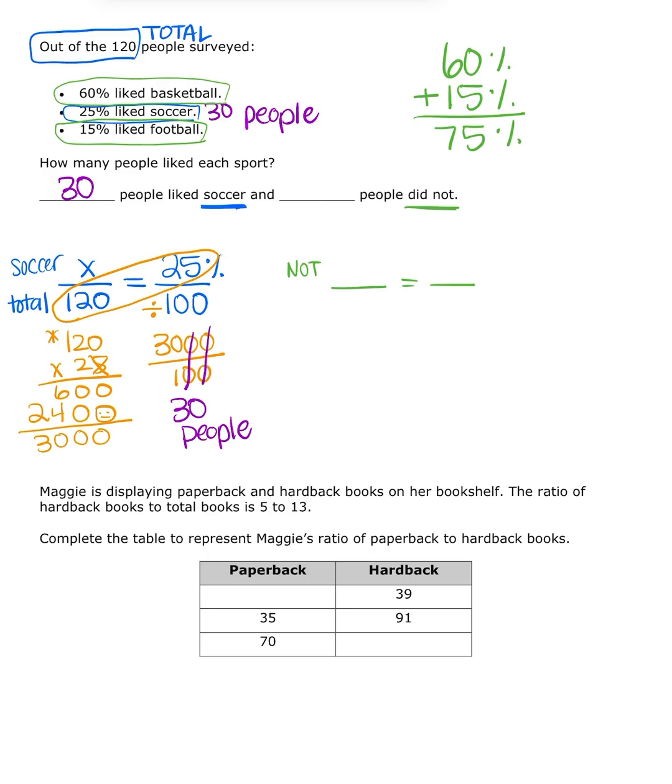So now that I have my percentage that did not, remember, 75 is a percentage, not a people. I would put my percent over 100. I would put my total on the bottom again, 120. And I'm looking for how many people did not like soccer. So again, 75 would be a Joe Schmo answer. We actually have to do math. So I'm going to do some math.